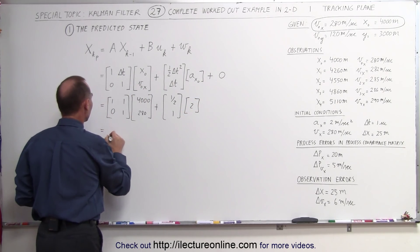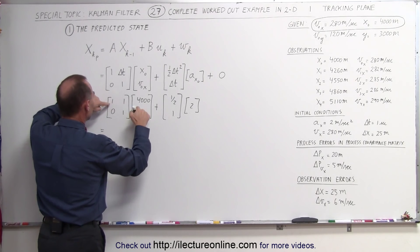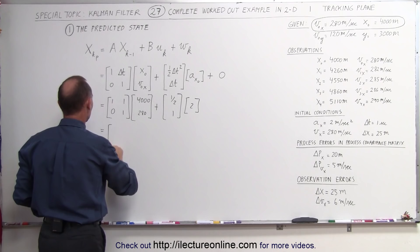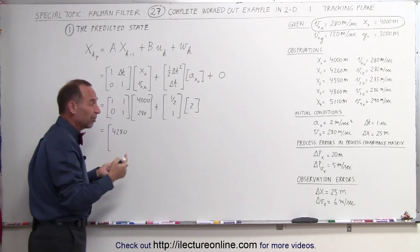Now let's go ahead and multiply this out and see what we get. Here we have a two-by-one matrix, that's 4,000 plus 280, that gives us 4,280 for the new position. That's a new predicted position, makes sense.